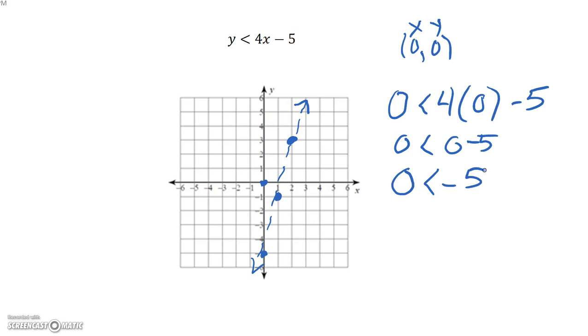So that means that 0, 0 on our graph here is not a solution to our inequality. Therefore, we're going to shade the other side.